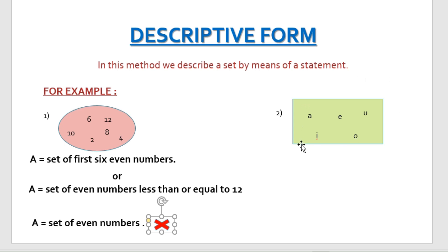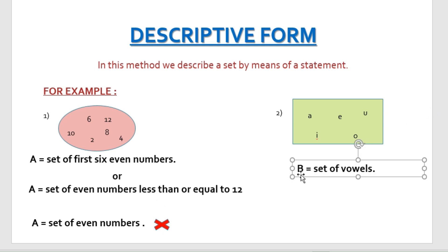The second example: the letters in this box are A, E, I, O, U. All of you know that these letters represent the set of vowels. So we can write it by means of a statement: set B is a set of vowels. In the descriptive form, we write the set in statement form where we accurately define the set.